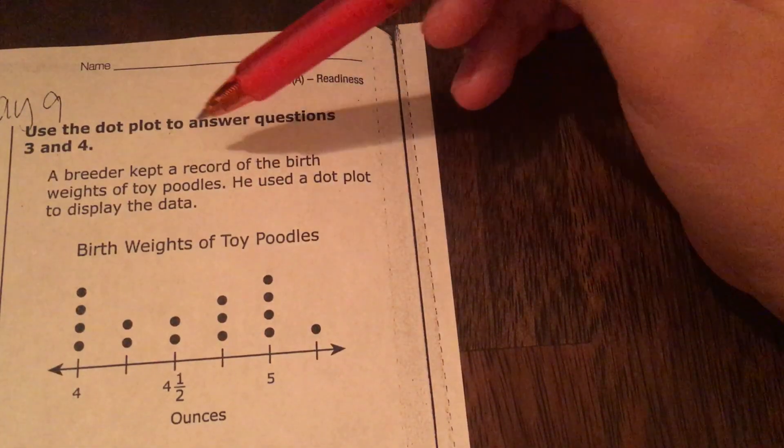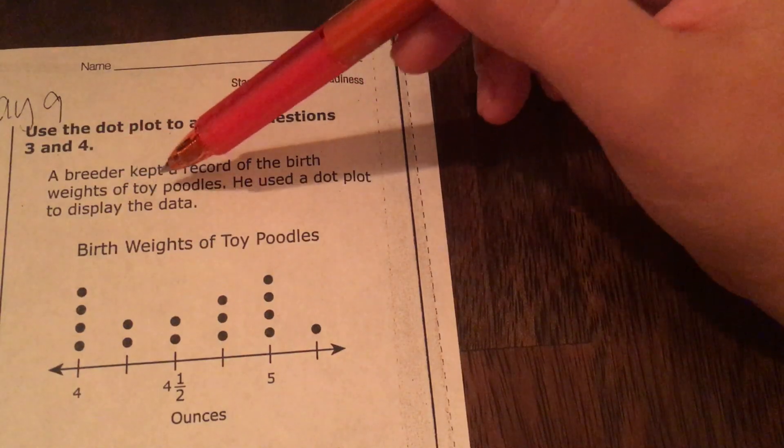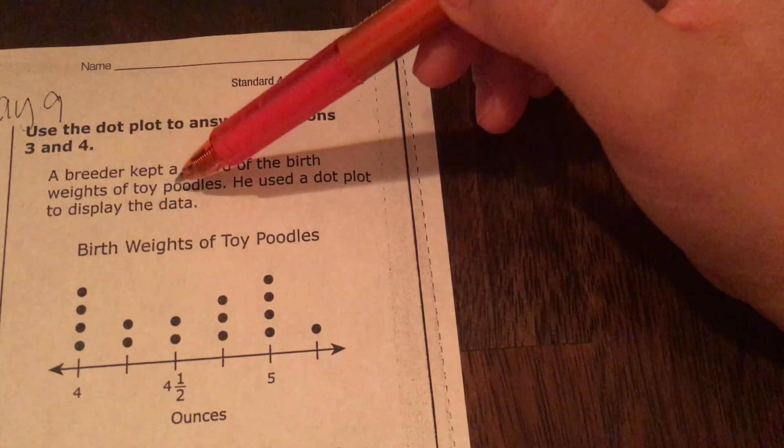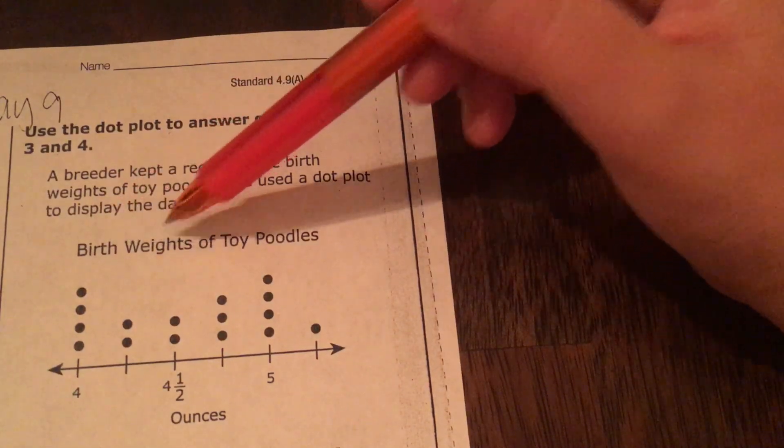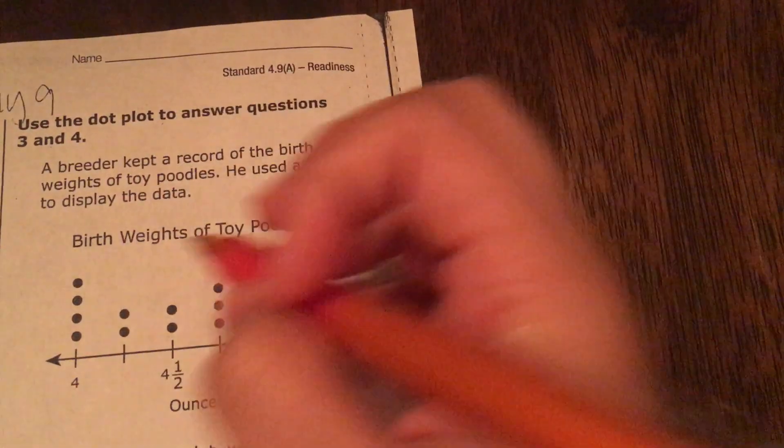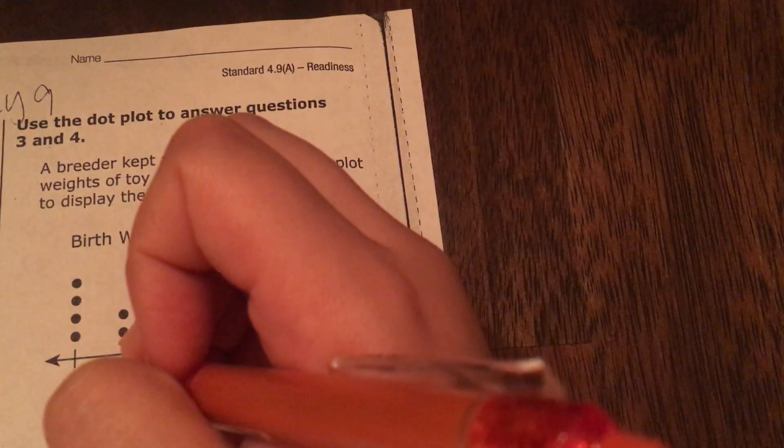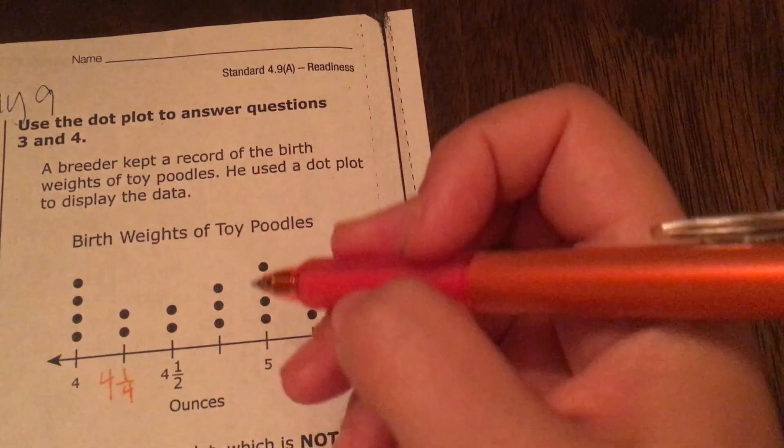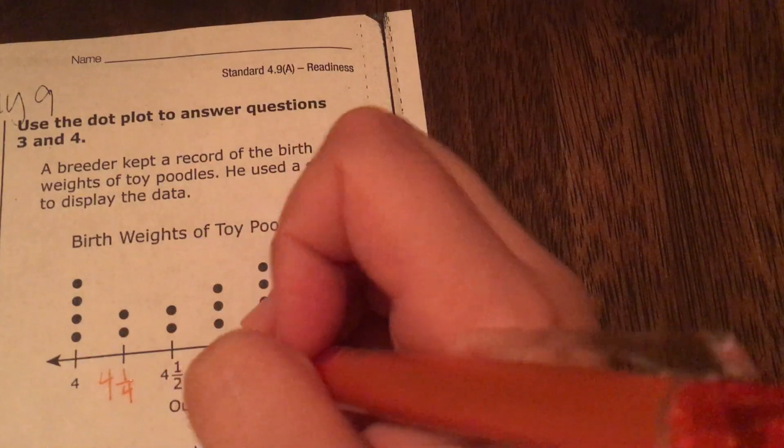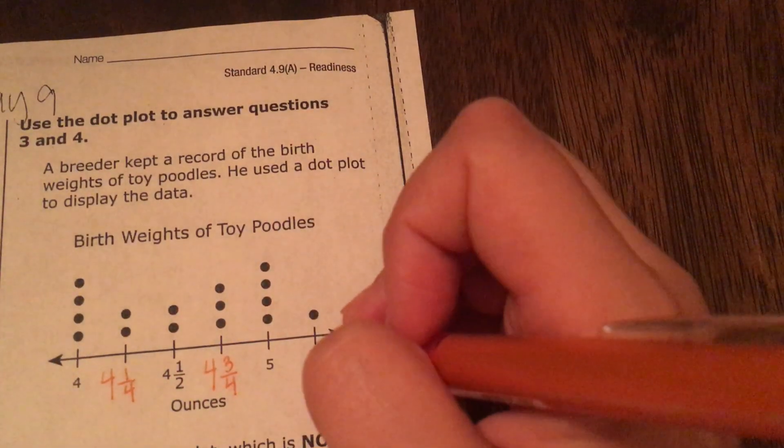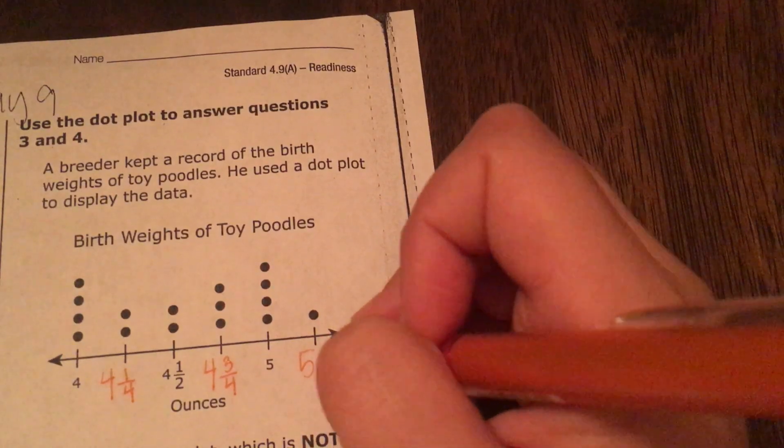A breeder kept a record of the birth weight of toy poodles. He used a dot plot to display the data. Birth weight of toy poodles. Okay. So I'm going to fill in my number line. This is actually four and one-fourth. And this is four and three-fourths. And this is five and one-fourth.